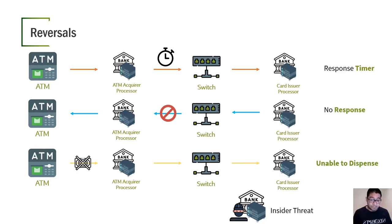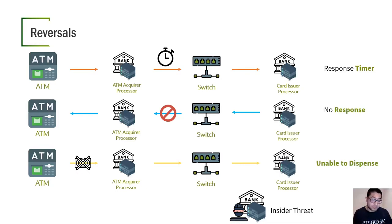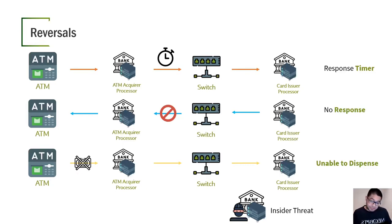Additionally, if the authorization response comes through and the ATM is commanded to dispense money but notices it doesn't have enough bills, the ATM will not dispense partial notes at all. Because it won't dispense, it sends a message to the card issuer processor so they know to make a reversal, since the amount was already debited from the account and the customer needs the money back. And as mentioned before, if we have an insider threat, a reversal could also happen by someone with access to the network commanding the switch.